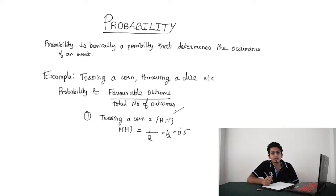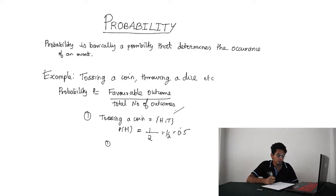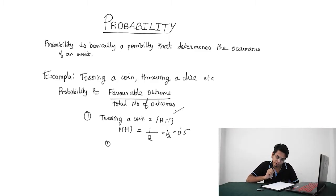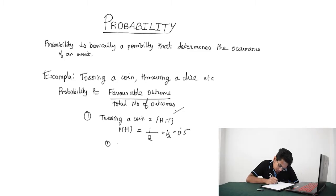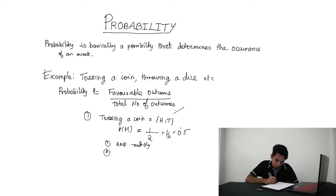Now I will be telling some tips and tricks to solve probability problems. First, whenever you encounter an AND in a question, you need to multiply. For example, calculate the probability of a king and a queen — then you need to multiply the probabilities. Second, if you see OR in the question, you need to add.